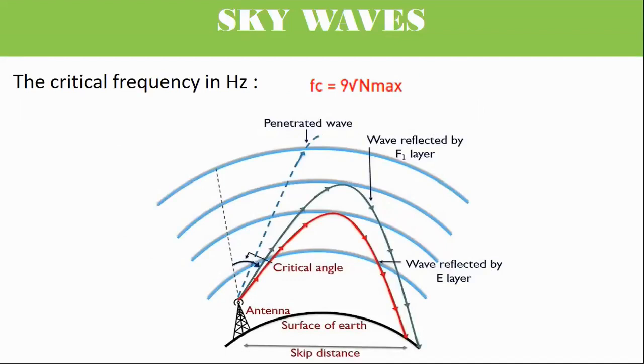Where Fc is the critical frequency in hertz, and n max is the maximum electron density per meter cube.